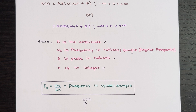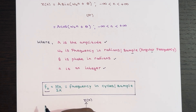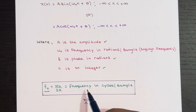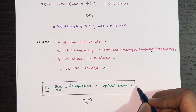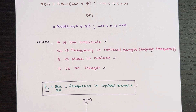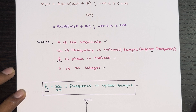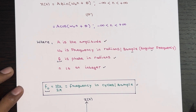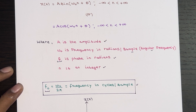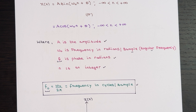Frequency, measured in cycles per sample and denoted by F₀, can be calculated using the formula F₀ = ω₀ / 2π. Phase shift refers to the displacement of the sine and cosine functions from their usual positions. In our case, θ defines the phase shift in the discrete time sinusoidal signal.